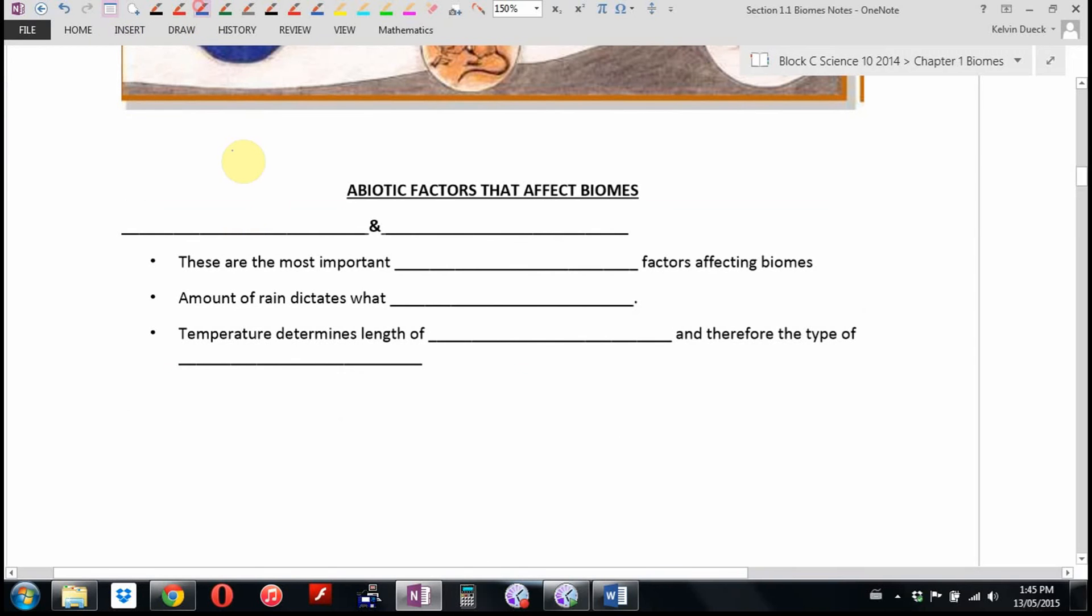What are some of the non-living or abiotic factors that affect biomes? Some of the big ones, the two big ones, are temperature, precipitation. How much heat? How much rain? Or lack of and lack of.